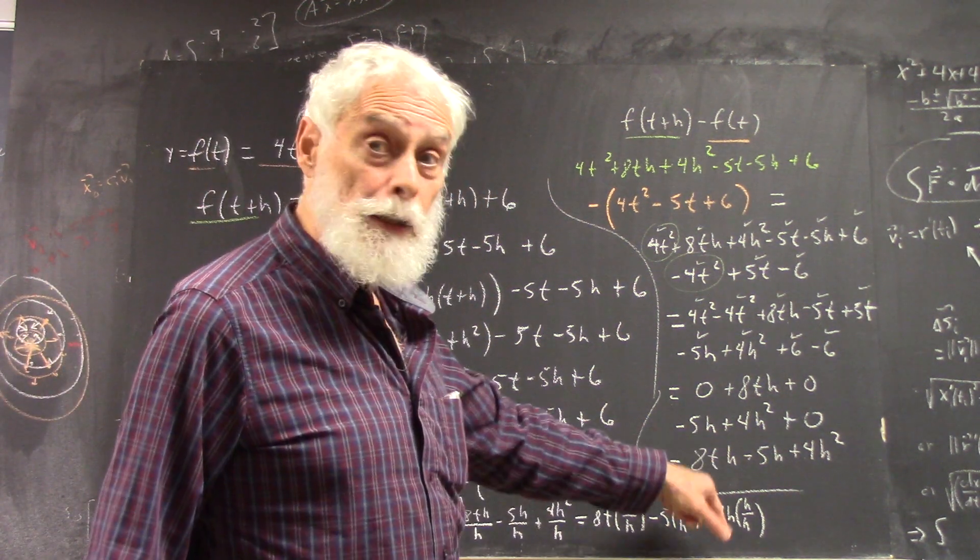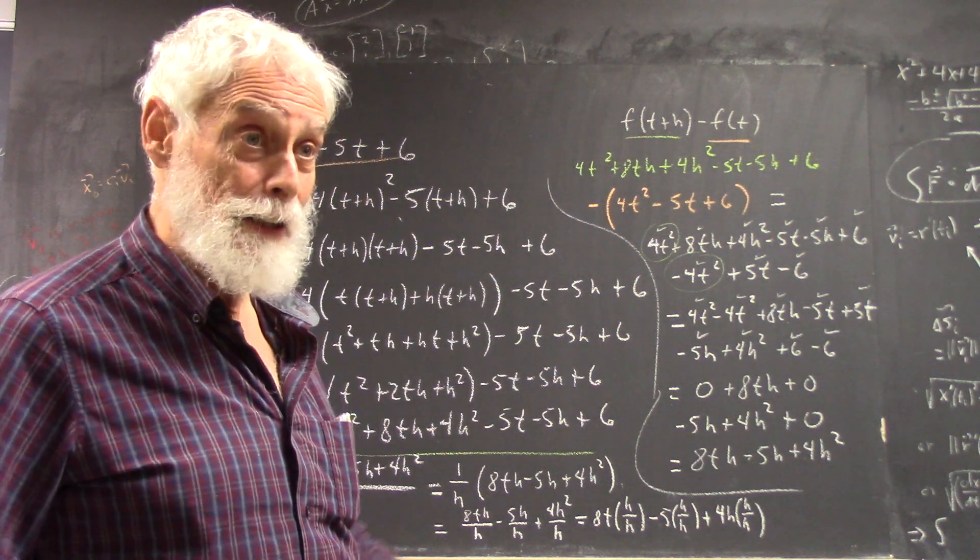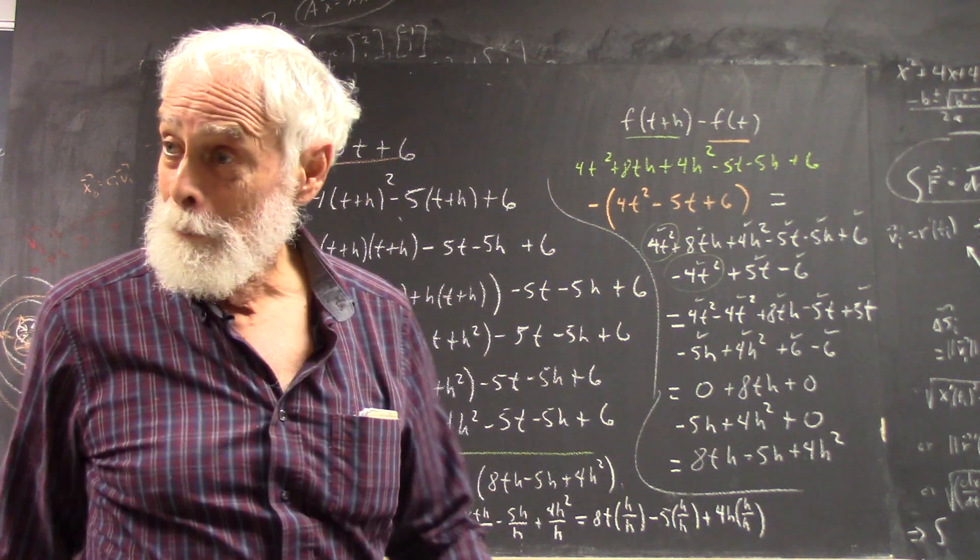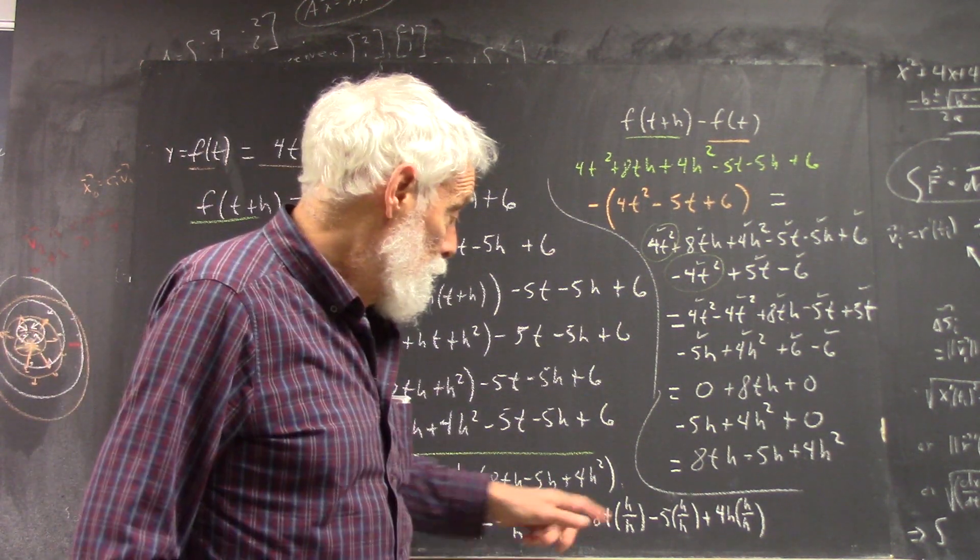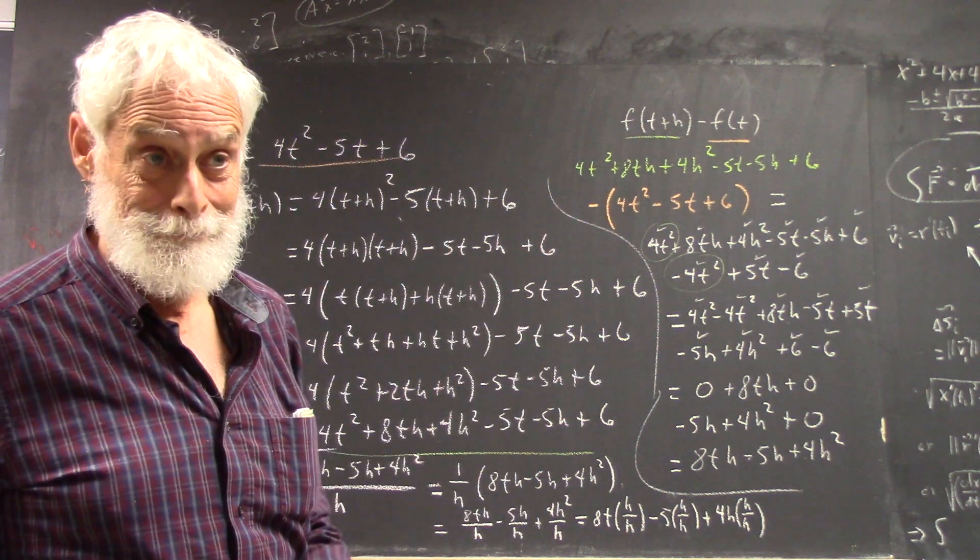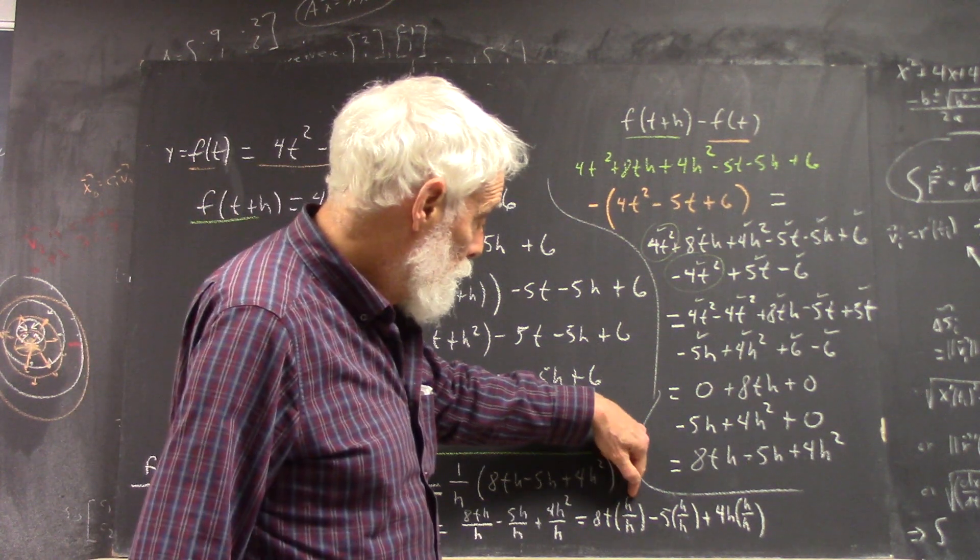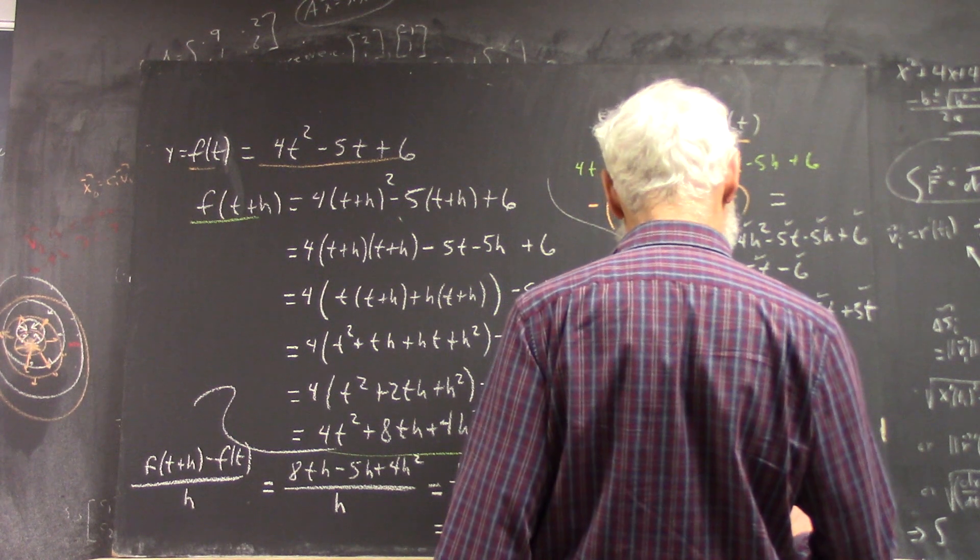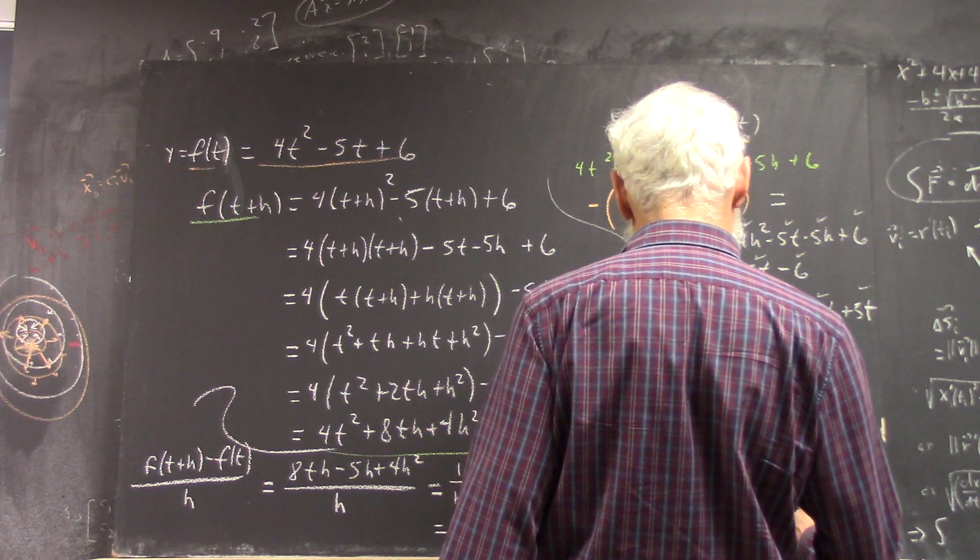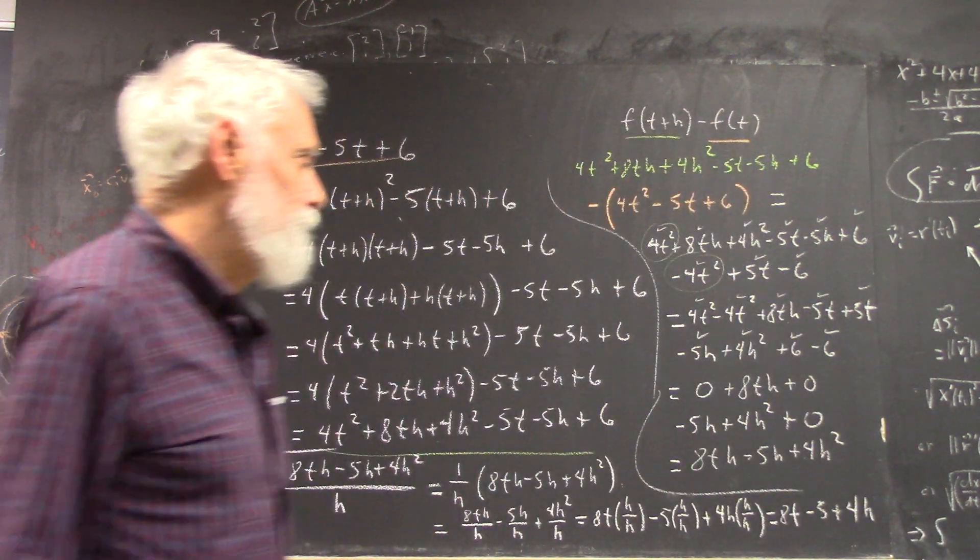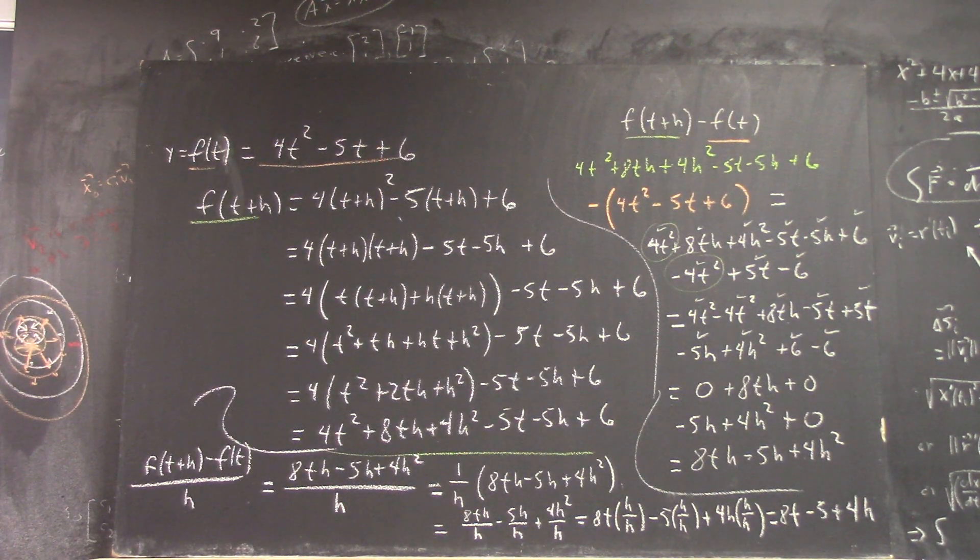Now, I want to write h over h as many times as I can, right? But I can only write it if it's valid. So, I can't just go writing it everywhere. Okay? And why do I want to write h over h? Because h over h is 1. And if 1 is multiplied by something, I just get that something. So, this gives me 8t minus 5 plus 4h. Okay? Does that make sense?